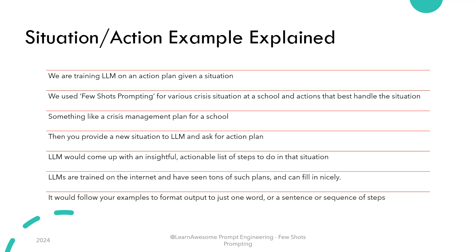Now you present it with a unique situation and ask for action. It should come up with an intelligent, insightful action plan formatted as a bulleted list like the examples you provided. The important bit is it's going to tap into its training to come up with a brilliant answer. Using few-shot examples, you can either come up with a very detailed what-ifs analysis per situation, or just a few lines plan, or short actionable statements. It would use its knowledge to answer, but would look to your examples to format the output and decide how detailed it needs to be. This is a big advantage of this pattern in particular.